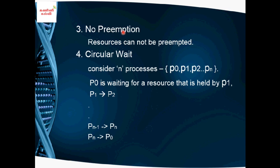The third condition is no preemption. Resources cannot be preempted. Preemption refers to scheduling — forcibly taking a resource away from a process. Under no preemption, if one process is using a resource, that resource cannot be forcibly taken away until the process completes execution.